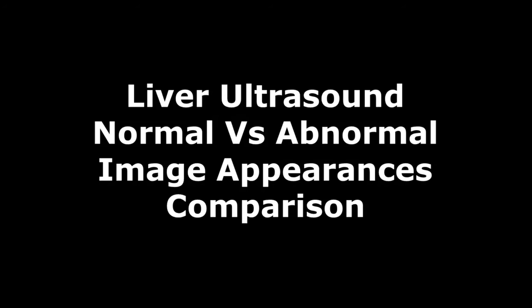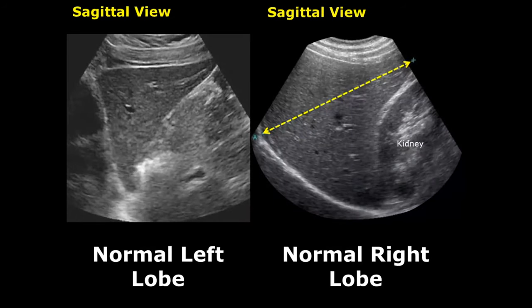Hello everyone, this is Dr. Sam. Today we will discuss image appearances of the liver. The first two images are normal appearances of the liver. This is the left lobe in sagittal view, and this is the right lobe. Here is the kidney, and the liver is having smooth echo texture.